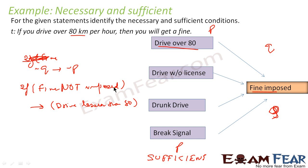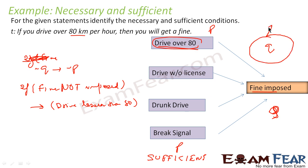Why? Because if you are saying that fine is not imposed, then I can 100% assure that this person was not driving above 80. That is a necessary condition, because with that only you can say the driver was not driving above 80 km. But when you say if this person is not driving above 80, you cannot be sure that fine was not imposed, because fine can be imposed using other conditions also. So generally, if P implies Q, Q is always a necessary condition and P is always a sufficient condition, because there are so many P's which make Q.